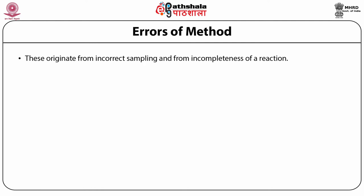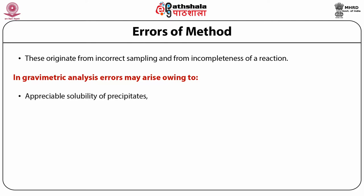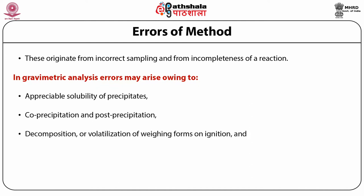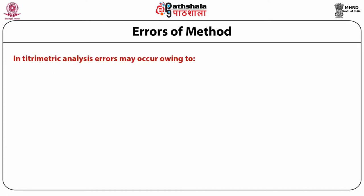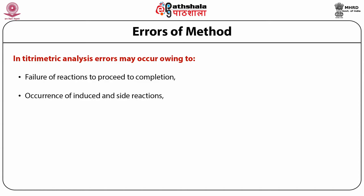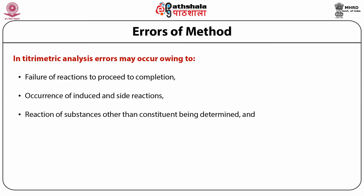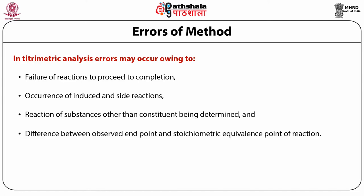Errors of methods originate from incorrect sampling and incompleteness of a reaction. In gravimetric analysis, errors may arise owing to appreciable solubility of precipitate, co-precipitation and post-precipitation, decomposition or volatilization of weighing forms from ignition, and precipitation of substances other than the intended ones. In titrimetric analysis, errors may occur due to failure of reactions to proceed to completion, occurrence of induced and side reactions, and difference between the observed end point and the stoichiometric equivalence point.